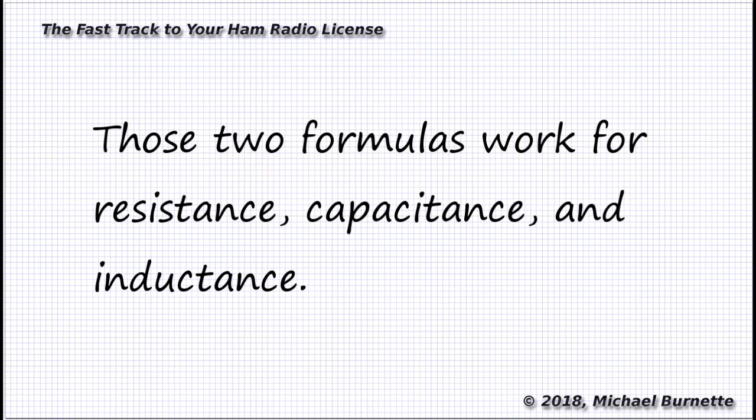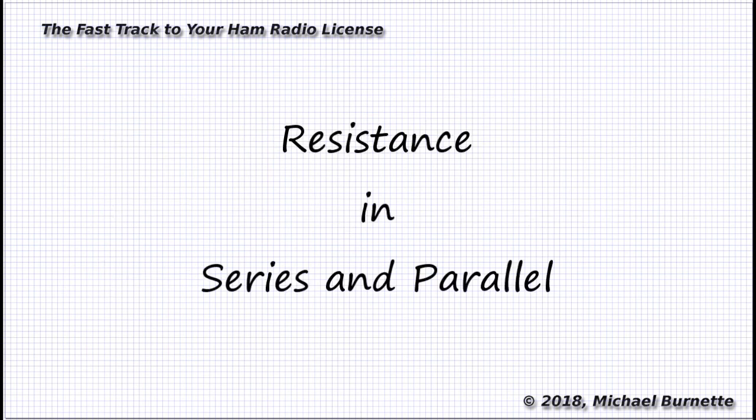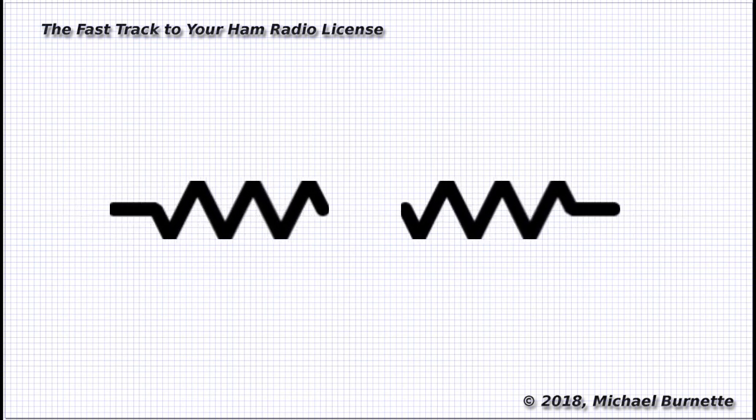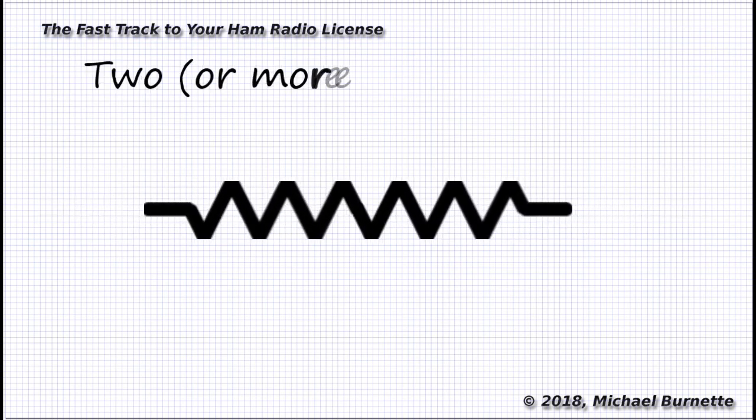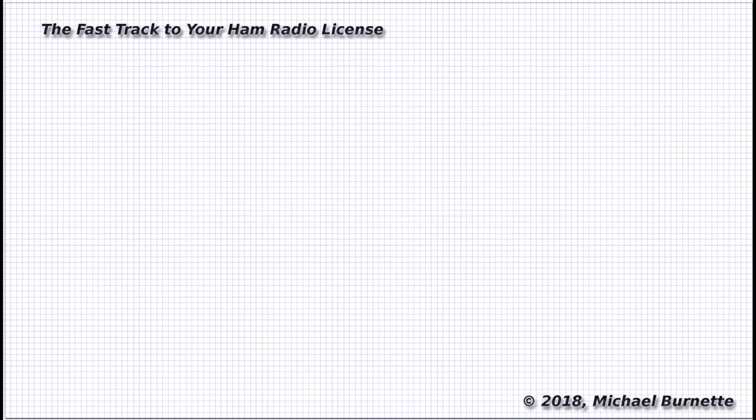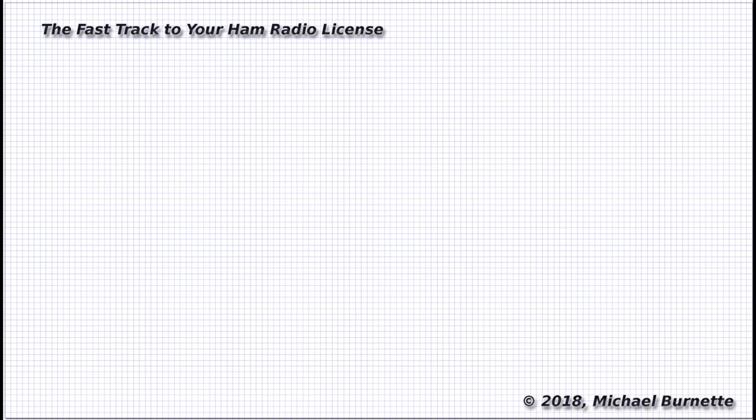Those two generic formulas work for resistance, capacitance, and inductance. Now we're going to start with resistance. If we start hooking up resistors one right after the other in series, they become one big resistor. After all, electricity doesn't know any difference at all between two 500 ohm resistors in series and one 1000 ohm resistor. For resistance in series, then, we just add up the values. Simple enough. Now I'm not even going to drag out the calculator to demonstrate that one.